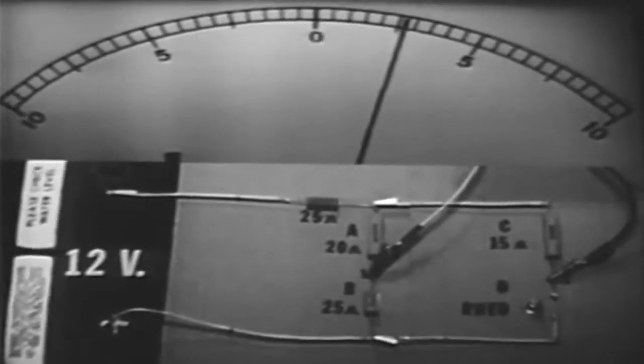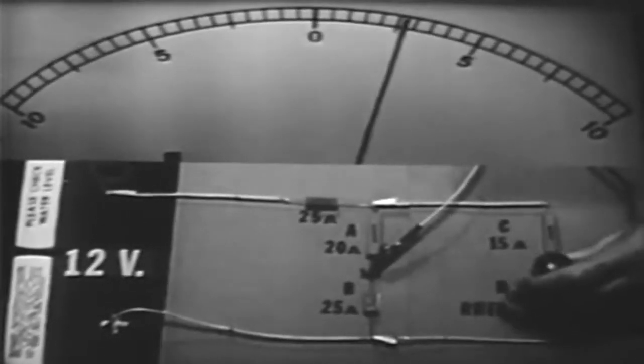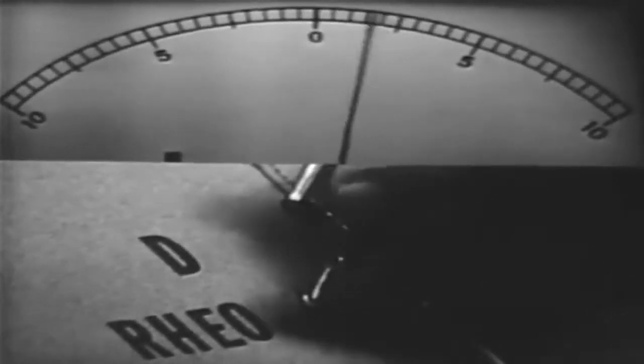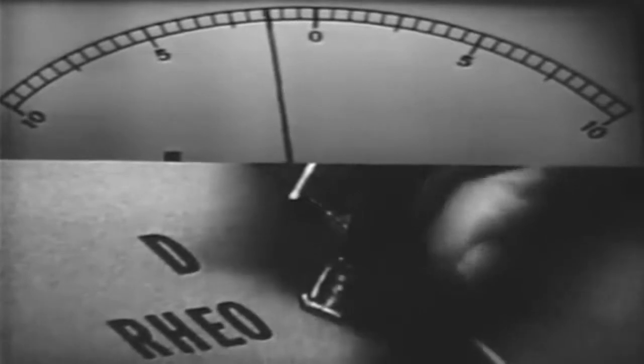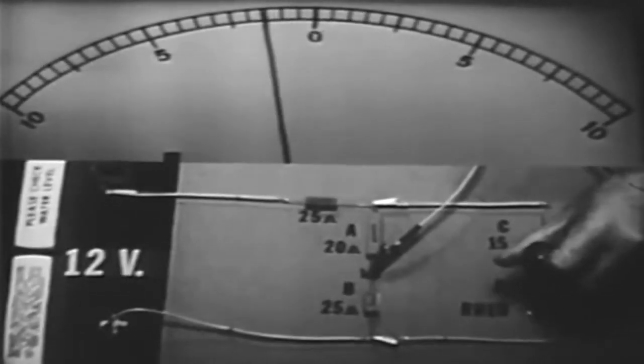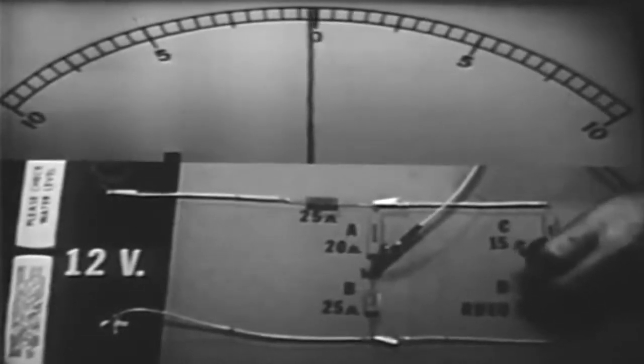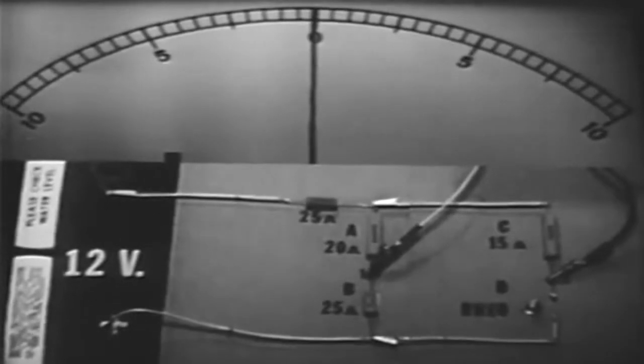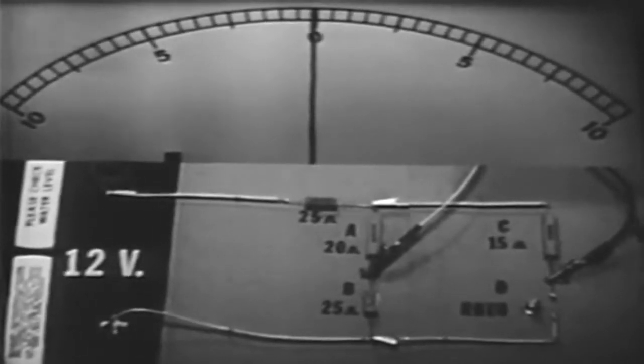Current flows from left to right. Notice that with a single control, we can cause current through the meter in either direction and vary the quantity of current. This feature of the bridge circuit makes it extremely valuable in many applications.